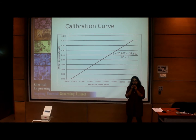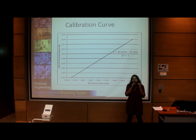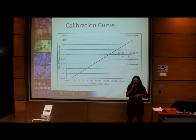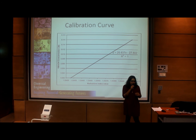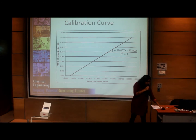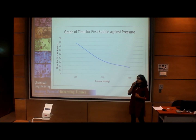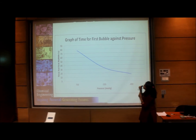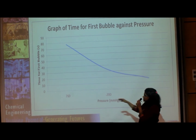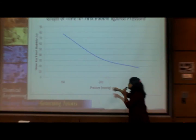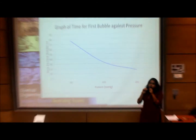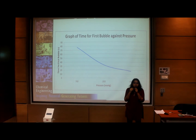This is what happened in our experiment — we obtained refractive index values below 1.3343, giving negative concentrations. We identified this as a problem with the refractometer or measurement in the lab. From our results, we plotted a graph of time for first bubble against pressure. As pressure decreases — from 760 mmHg (ATM) to negative 200 to negative 400 mmHg — the time decreases, confirming that the solution boils faster.